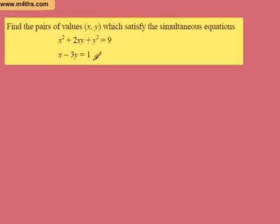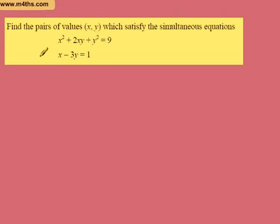That's an example of a linear — the power's only to the first power. This is non-linear. We've got x squared plus 2xy plus y squared is equal to 9. You may look at trying to factor it and tidy it up, but ultimately we can just solve this by a method of substitution.